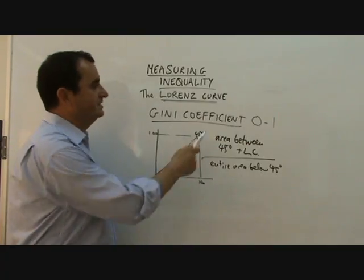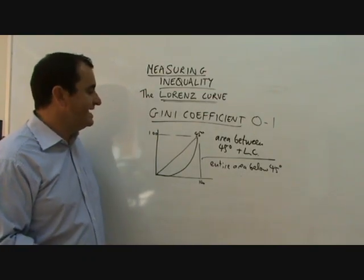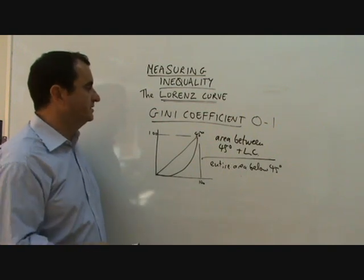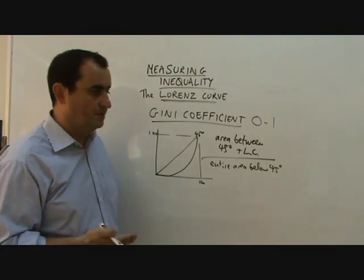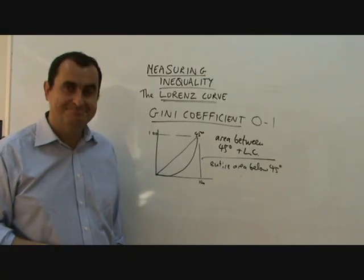But, of course, then again, you cannot calculate a Gini coefficient without having a Lorenz curve anyway. So, any inaccuracy of the Lorenz curve itself will show itself in the Gini coefficient as well. Anyway, this is a way we can look at the equality of income distribution in an economy. Okay? Thanks.